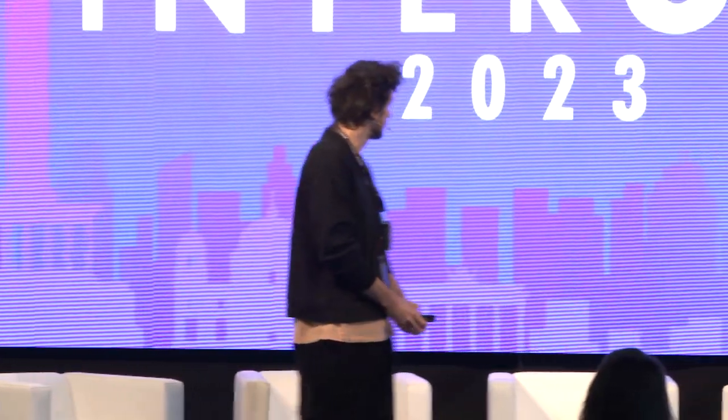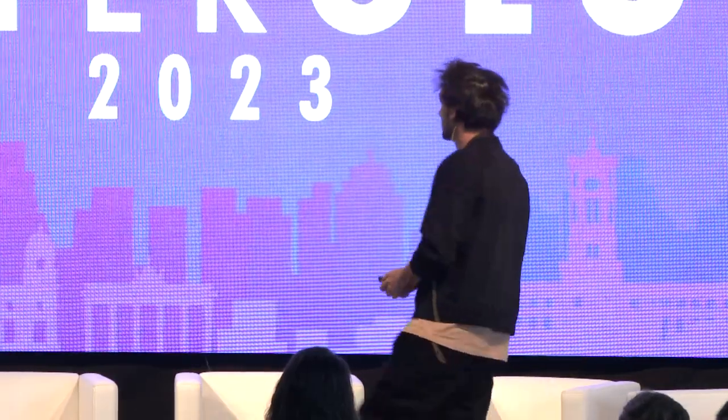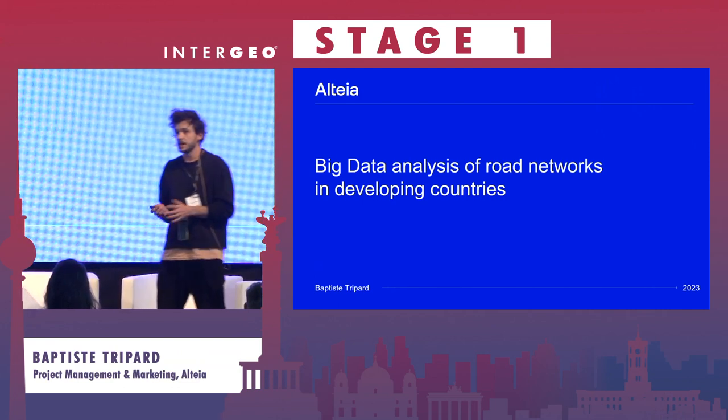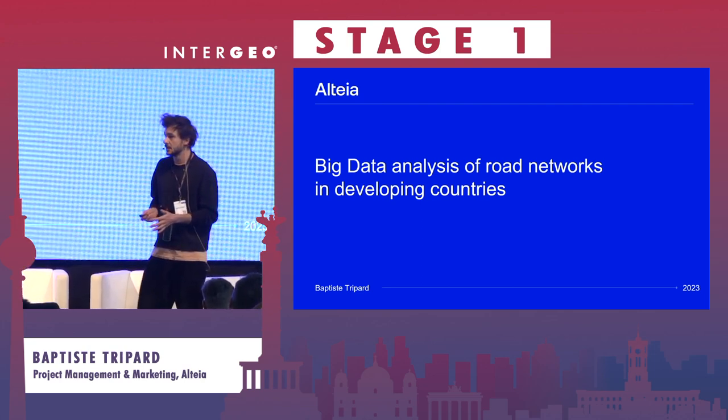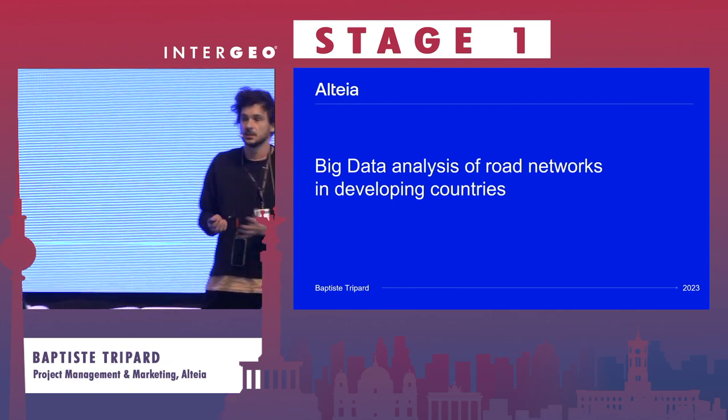Good afternoon everyone. I'm going to talk about a project that we've conducted together with the World Bank. The project is really about leveraging any kind of freely accessible data — geospatial information coming from GIS databases but also low-resolution satellite imagery — to make assessments of road network infrastructure at scale, evaluating the condition of roads in developing countries to better plan investment programs and make road networks more resilient to climate change.